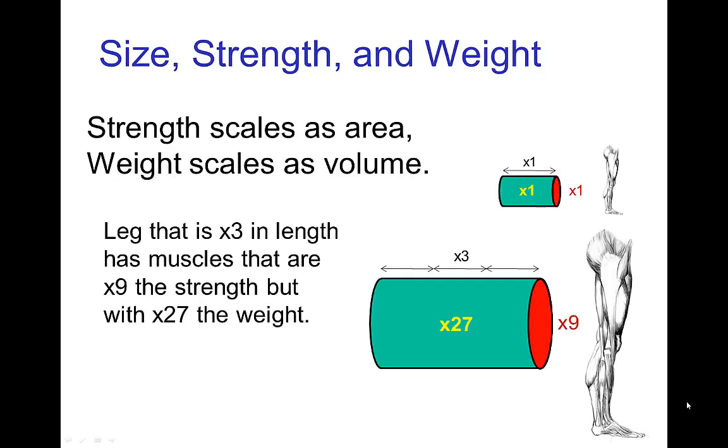Now this is important in terms of the scale of characters or animals, in that the strength of muscles scales as the area because it's the cross-sectional area of a muscle that determines its total strength. Same thing for bones. However, the weight scales as volume.